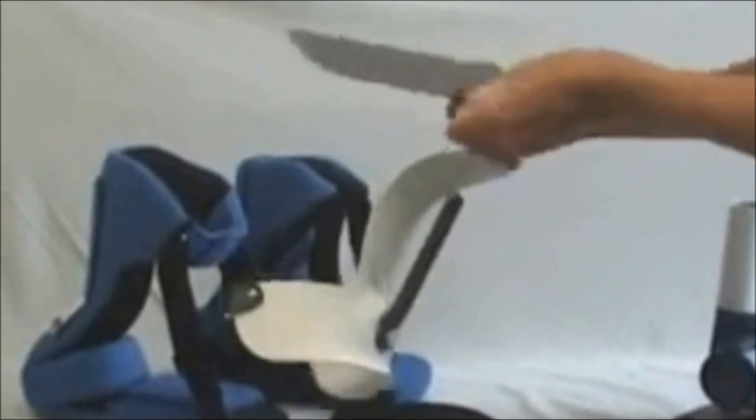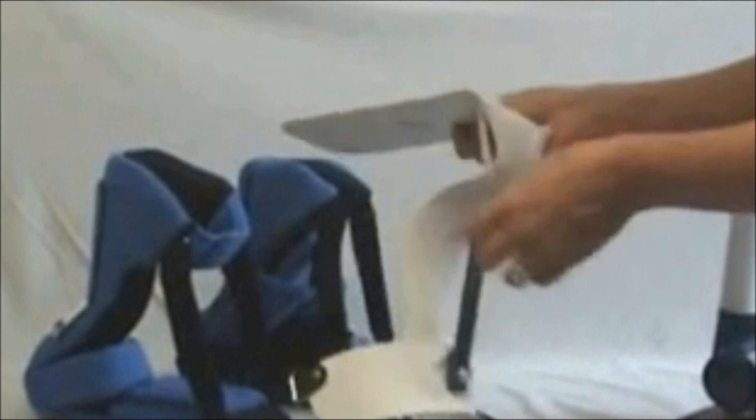Peel back the peel and stick hook so you have a smooth surface. Prepare it to be remolded. Just stick it anywhere out of the way. Then put on your gloves to protect your hands.